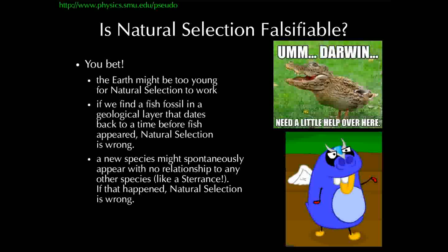Another thing that could falsify natural selection: a new species might spontaneously appear with no relationship to other species. If a creature were to just appear out of nowhere in the biological systems of our world with no genetic relationship to any other species we know about, that might be evidence against natural selection. This shows that at any moment, like any good scientific theory, there's a chance you could make an observation that completely disproves the original hypotheses underlying the scientific theory. But in 150 years of testing, despite looking — and discovering something like this would lead to a Nobel Prize — no one has been able to find a definitive, reproducible scientific observation that so far disagrees with the predictions of natural selection.